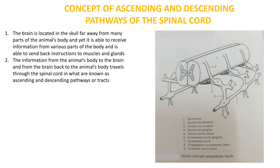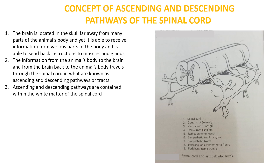The ascending and descending pathways are contained within the white matter of the spinal cord. The spinal cord has two components: the white matter component and the gray matter component, which is centrally located. The white matter consists of dorsal root afferent fibers entering the spinal cord, ventral root efferent fibers leaving the spinal cord, fibers conducting impulses between various segments, and tracts running to and from the brain — the ascending and descending tracts.